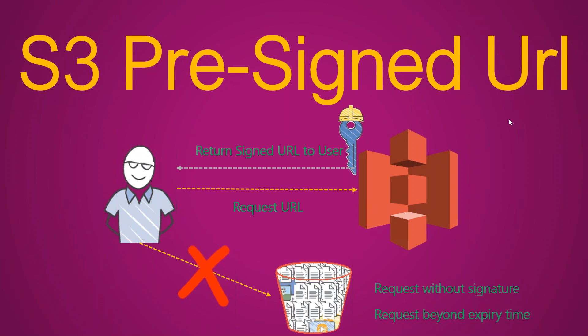So no public access for the bucket, no public access for the object. And you also don't want to share your private key or your credentials for your S3 bucket for people to access. So how do you do that? Amazon provides this option called S3 pre-signed URL.